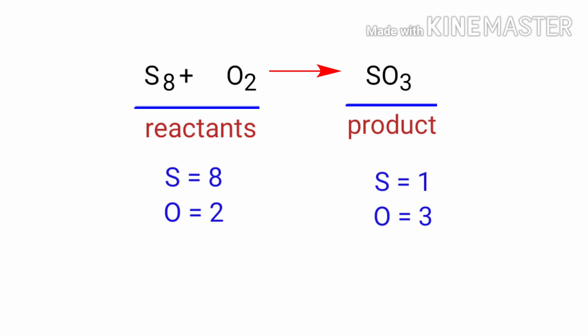In this equation, we need to balance the sulphur atoms first. To do this, we need to put a coefficient of 8 in front of SO3. The sulphur atoms are balanced.